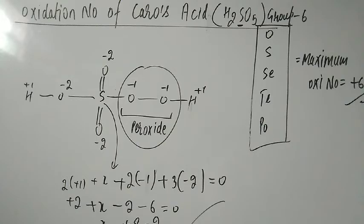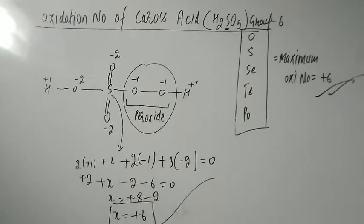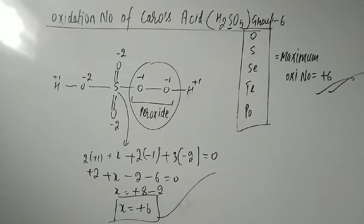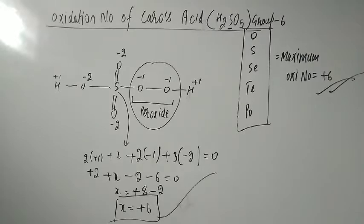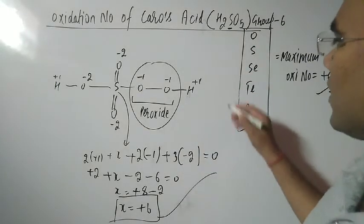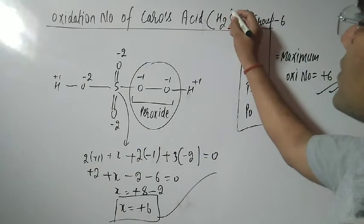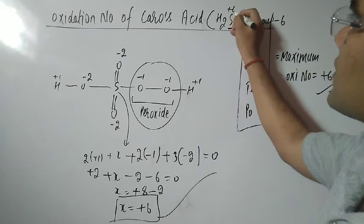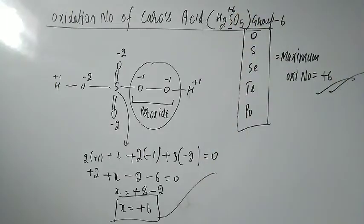So the oxidation state of sulfur in Caro's acid is plus 6. The oxidation number of sulfur is plus 6. Thank you so much for watching, dear students.